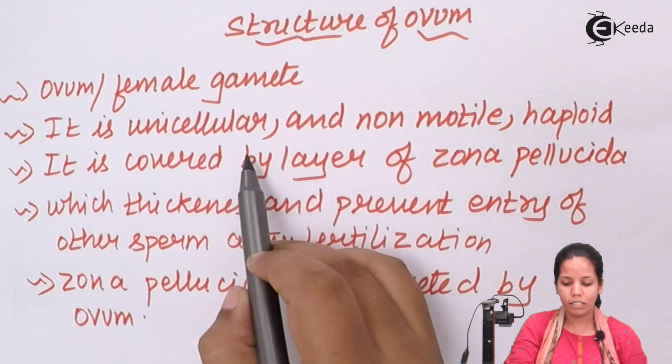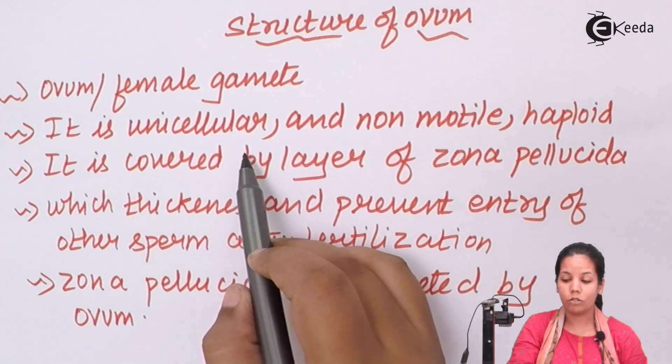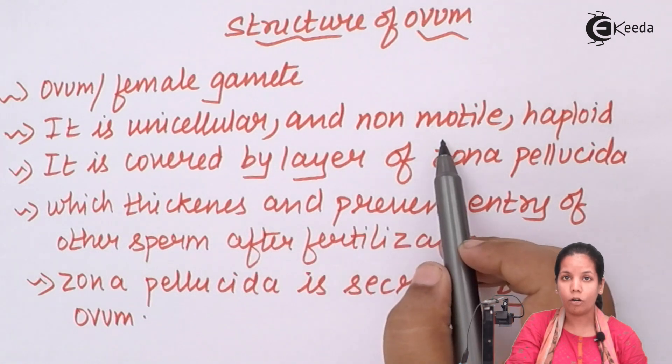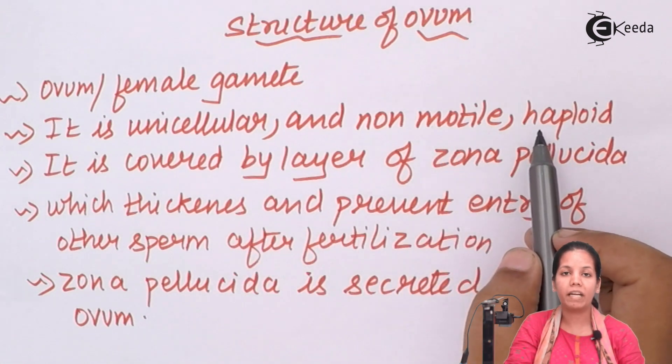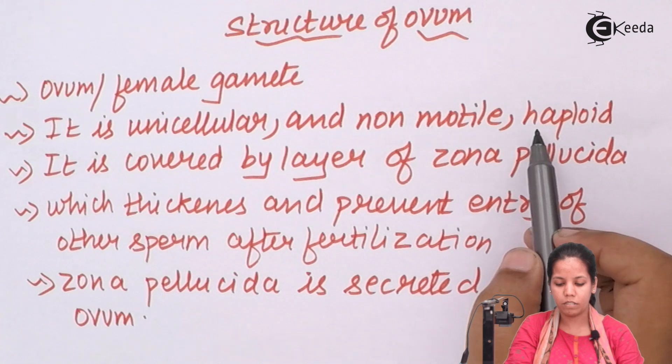It is unicellular, non-motile, cannot move, and haploid — which means it has 23 chromosomes.